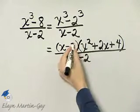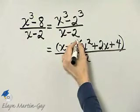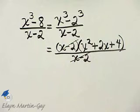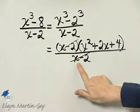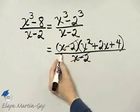This is essentially the same as removing a factor of 1, which does not change the value of our rational expression as long as x is not 2. So I'm dividing out the common factors.